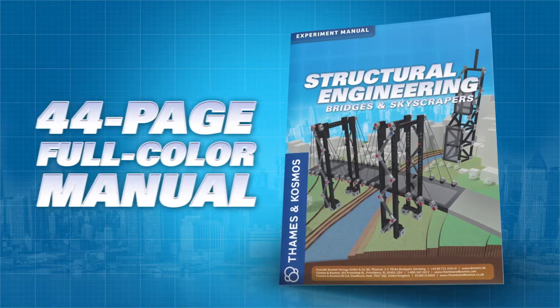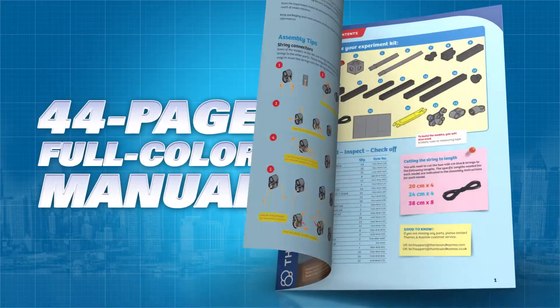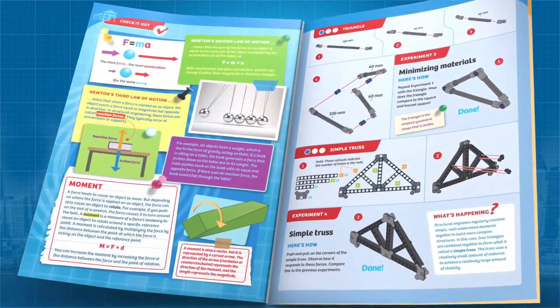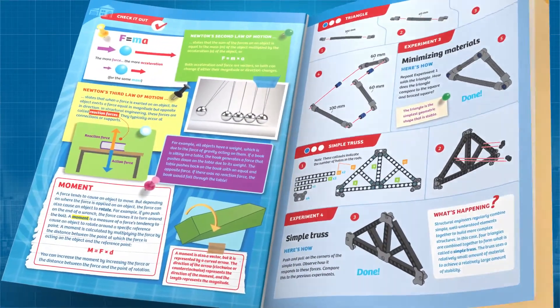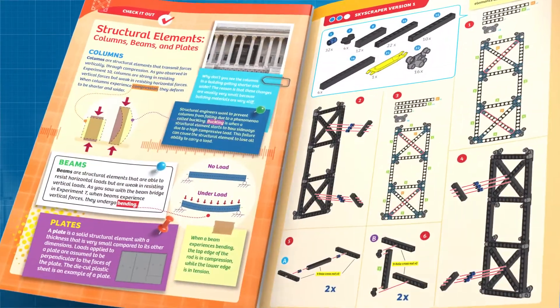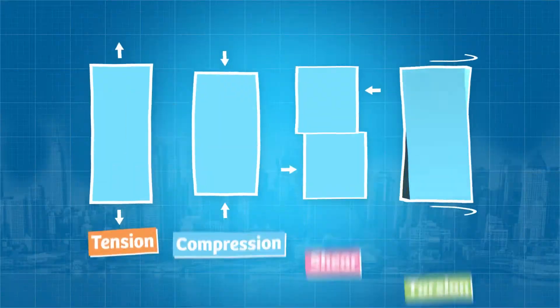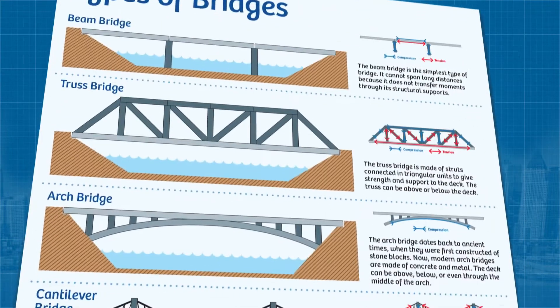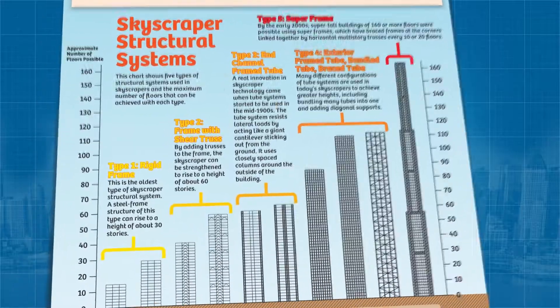A 44-page full-color manual provides step-by-step building instructions and an overview of structural elements, the forces acting on structures, and different types of bridges and skyscrapers.